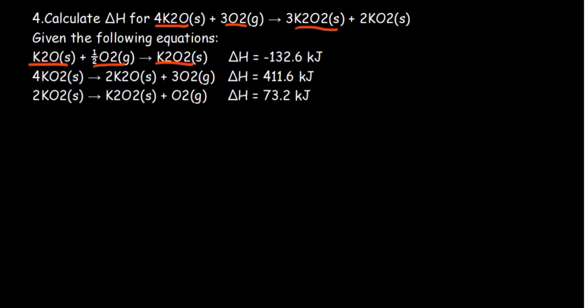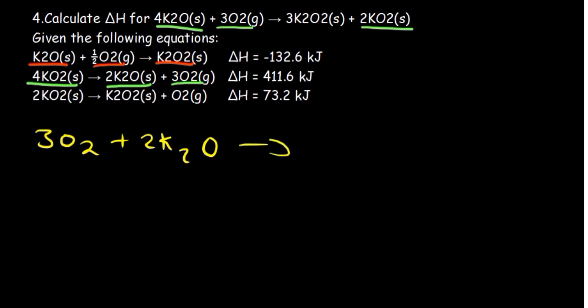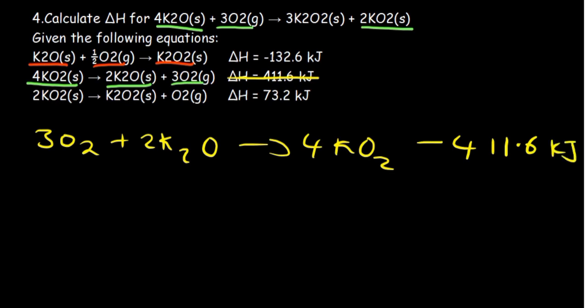Going to the second reaction: I can see a species on the opposite side of the main equation, and another species is also on the opposite side, along with oxygen. Everything in this reaction is on the opposite side compared to the main equation. So the best thing to do is reverse it. If we reverse it, we'll have 3 O2 plus 2 K2O as reactants and 4 KO2 as the product. Reversing changes the sign, so it becomes negative 411.6 kilojoules.